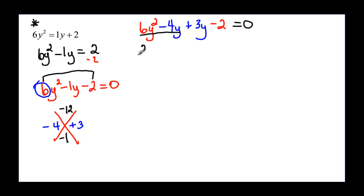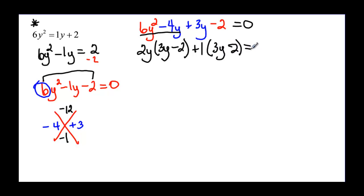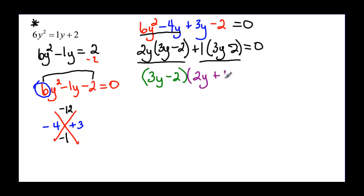Factoring by grouping: 2y is a common factor in the first group, giving 2y(3y minus 2). In the second group, 3y and negative 2 have only a positive 1 in common, leaving (3y minus 2). Now taking the greatest common factor of (3y minus 2), the fully factored form is (3y minus 2)(2y plus 1) equals zero.